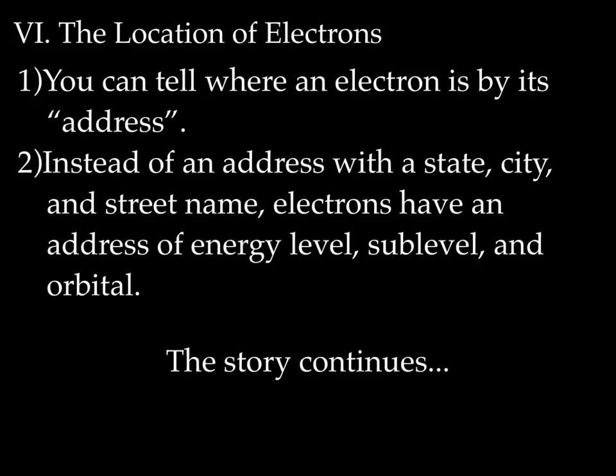We're going to spend the rest of this unit talking about the location of electrons. You can tell where an electron is by what we call its address. Instead of an address with a city, state, and street name, electrons have an address of an energy level (1 through 7), a sublevel (S, P, D, or F), and an orbital. And that's it for today — however, the story continues. This was just a preview.